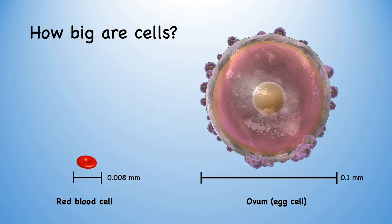Here we have images of a red blood cell and an ovum, roughly to scale. A red blood cell measures 0.008 mm, meaning there are 125 red blood cells in only 1 mm. In comparison, the ovum measures 0.1 mm, meaning there are only 10 egg cells in 1 mm. Therefore, the egg cell is almost 10 times bigger than the red blood cell.